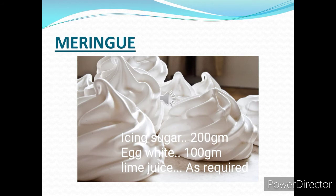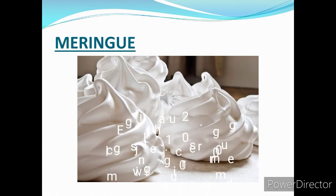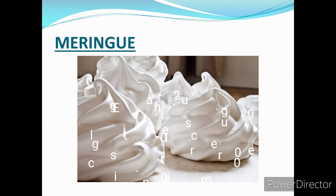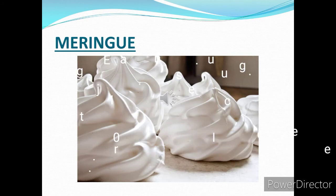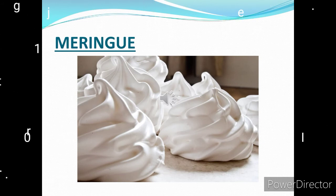Meringue can be used in cookies, mixed with buttercream in desserts, or even as a garnish. There are three types of meringue: French meringue, which is generally baked in the oven; Italian meringue, where hot syrup is poured on top of fresh meringue and mixed with a spatula till a smooth texture is achieved; and Swiss meringue, where sugar and egg white are whisked together over a double boiler till smooth.